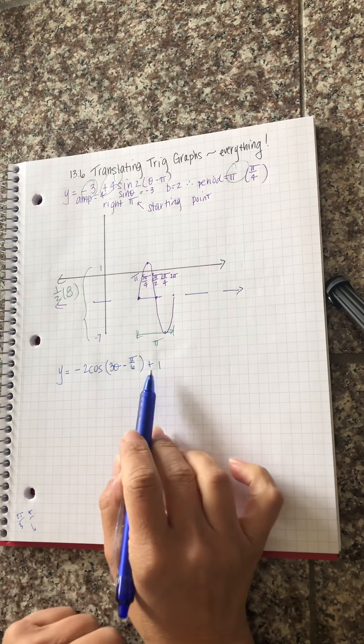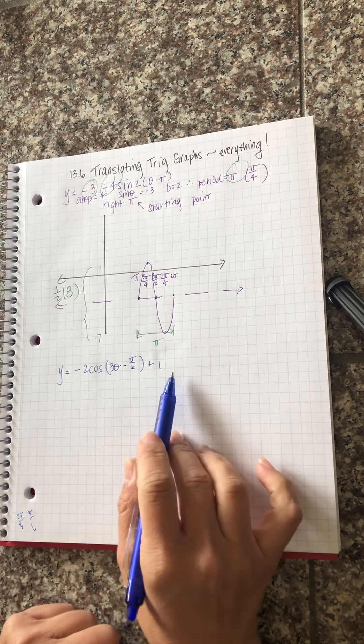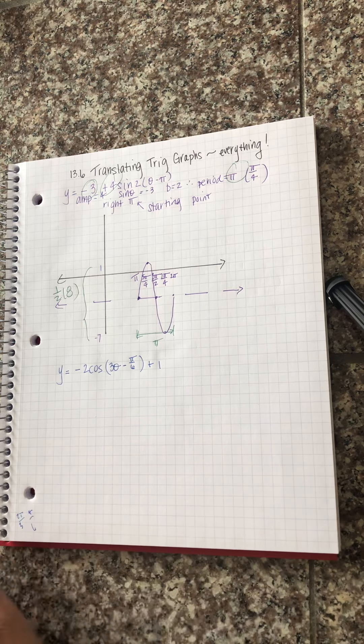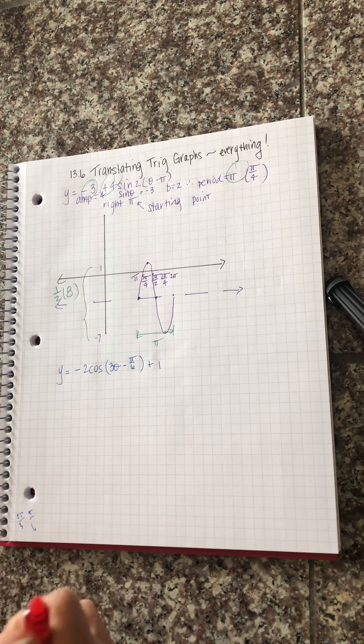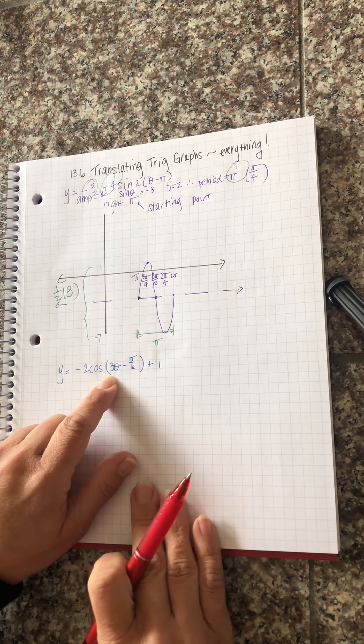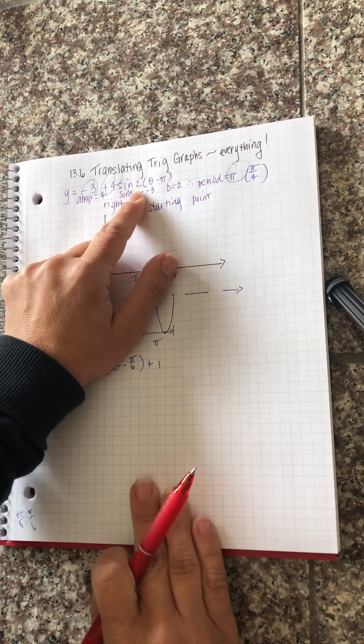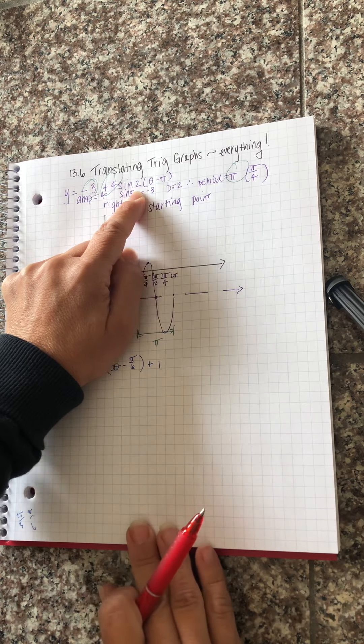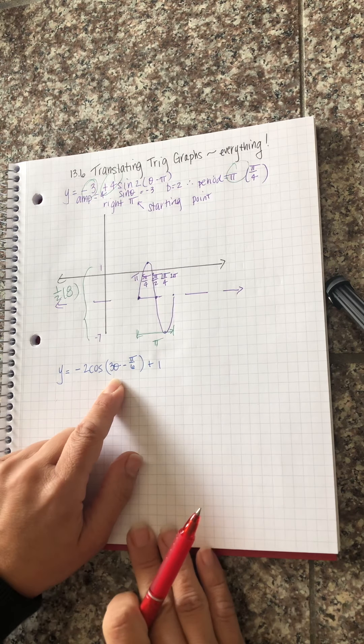Here's the key thing that you need to look at. B is the coefficient on theta. Every problem you've done so far B has been factored out. You can factor out the three if you want. You don't have to.